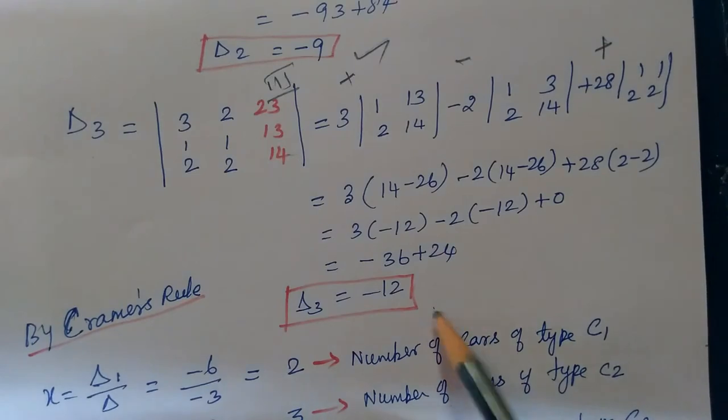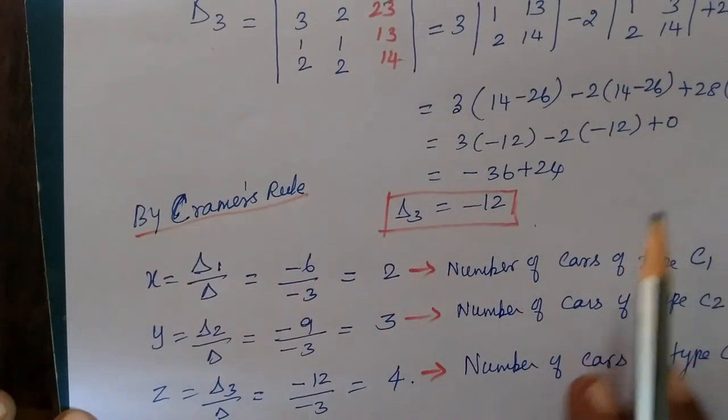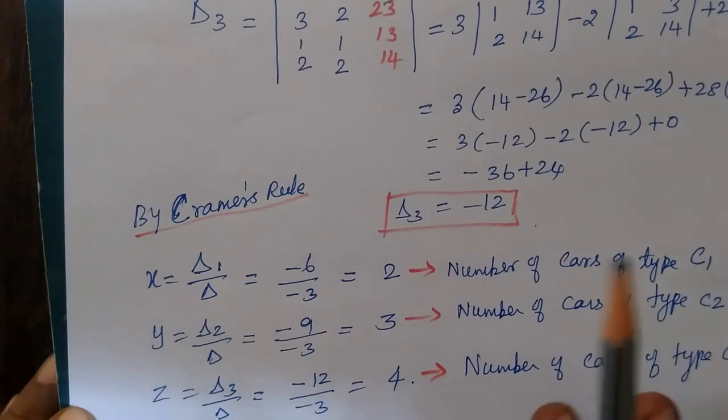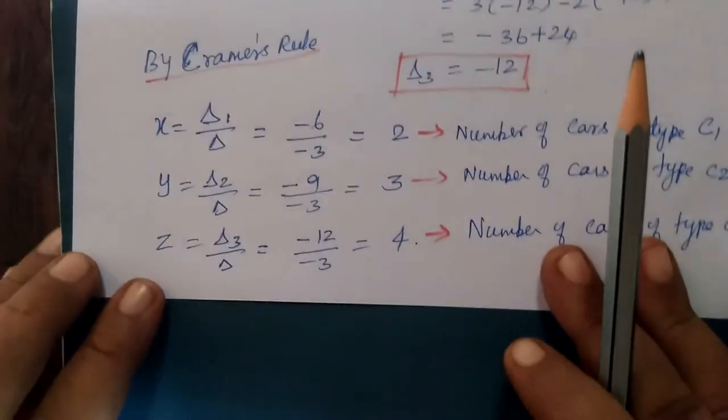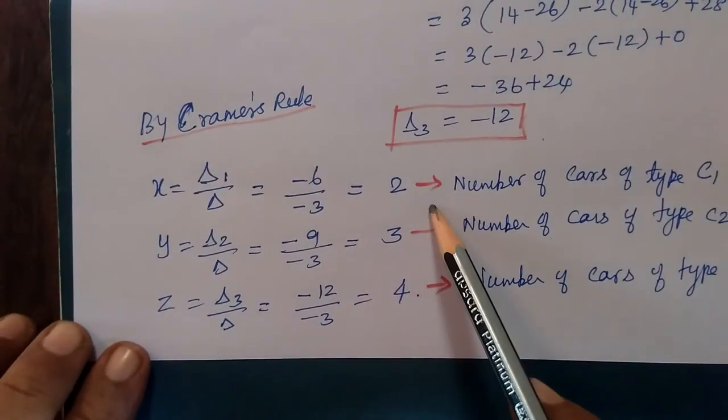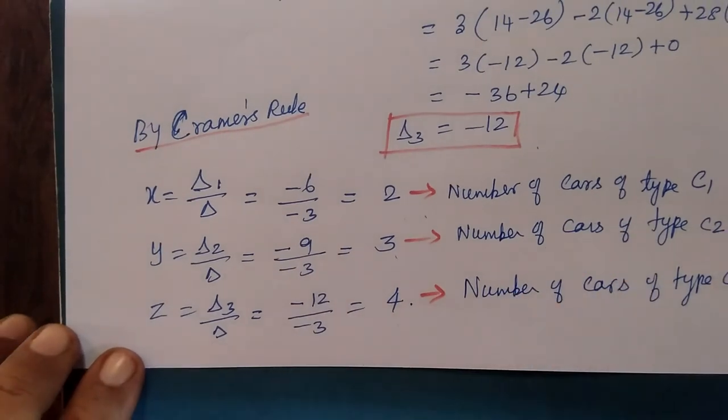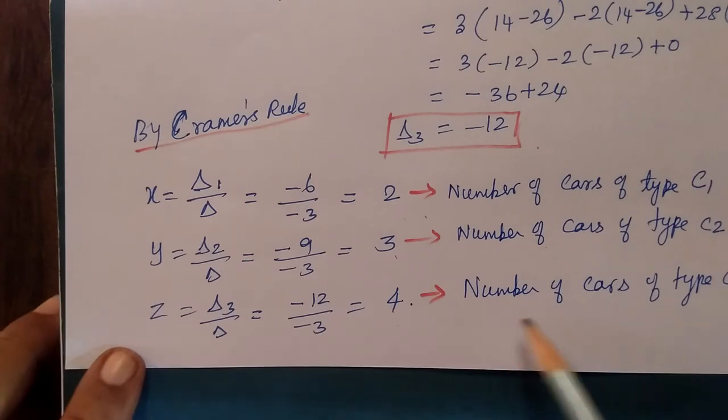So by Cramer's rule, x equals delta 1 by delta, and y equals delta 2 by delta. Substituting the values, we are getting 2, 3, 4. So number of cars of type C1 produced is 2, and for C2 type, 3 cars.